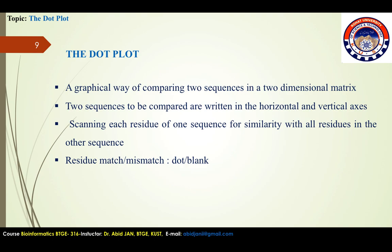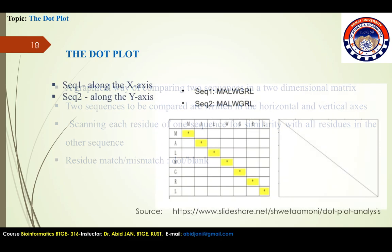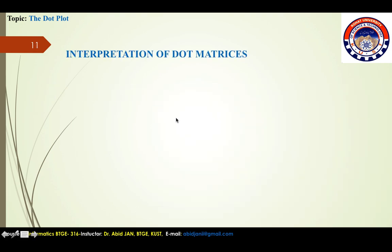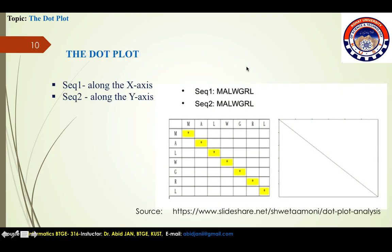If a residue match is found, a dot is placed within the graph; otherwise the matrix positions are left blank. Consider two sequences — sequence one and sequence two. We proceed by creating a rectangular matrix in which the residues of sequence one are mapped along the x-axis and those of sequence two along the y-axis.